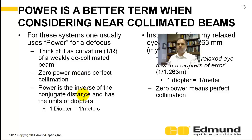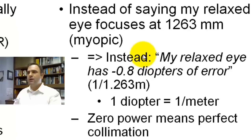Zero power means perfect collimation. And the units for power is usually diopters, which is the inverse meters. So instead of saying my eye focuses at 1263 millimeters, which is myopic, instead say my relaxed eye has a negative 0.8 diopters of air, which is found by one over 1.263 meters. And again, zero power means perfect collimation.